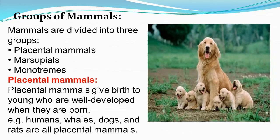Mammals are divided into three groups. The first group is placental mammals. Placental mammals give birth to their young ones, which helps them to feed milk to their young ones.